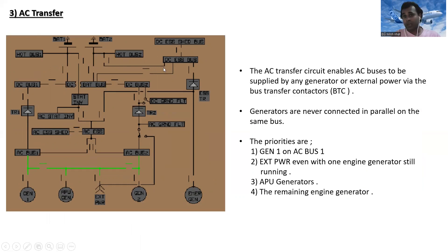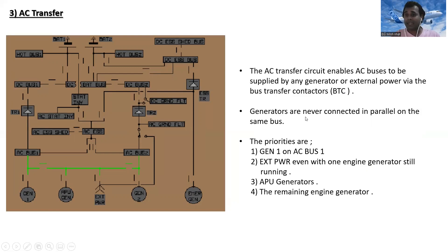AC transfer: the AC transfer circuit enables AC buses to be supplied by any generator or external power via bus transfer contactors (BTC). Generators are never connected in parallel on the same bus. The supply priorities are: first, generator one on AC bus one; second, external power even with one engine generator still running; third, APU generator; and fourth, the remaining engine generator.